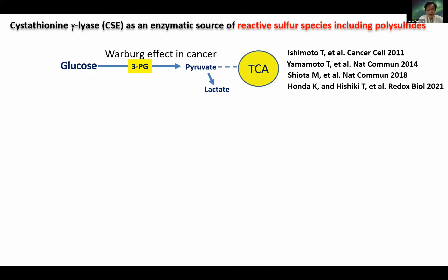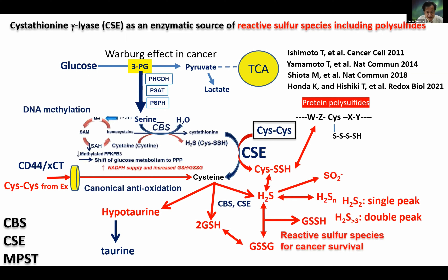Let me explain very briefly. You can see the Warburg effect metabolic map. Glucose is converted into lactate, but interestingly, the intermediate glycolytic metabolite 3-phosphoglycerate is also converted into serine. In the presence of the methionine cycle, you can see CSE in the midway of the trans-sulfuration pathway. This enzyme is necessary to produce cysteine. But interestingly, if the substrate is cystine—a dimer of cysteine—that produces a very toxic persulfide, which also generates different persulfide species.